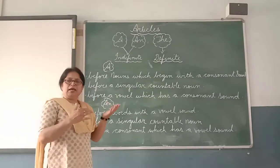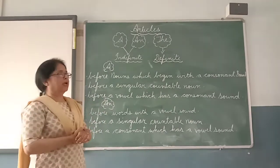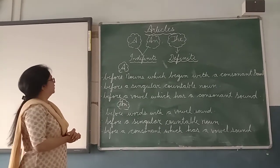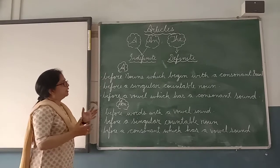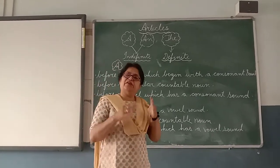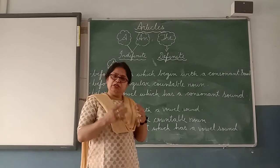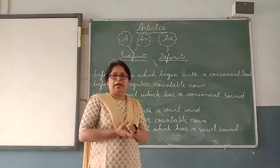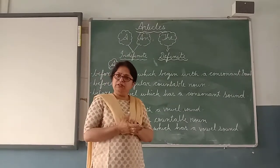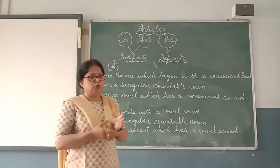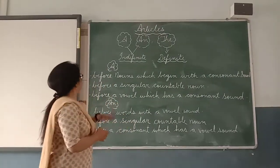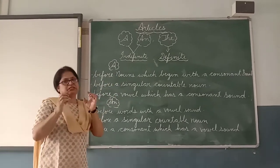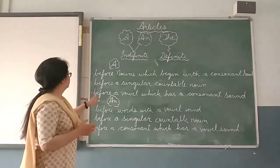How to use A and An, and where to use A and An. First, we learn the usage of the article A. It is used before nouns which begin with a consonant sound. You know that there are 26 letters in the English alphabet, 5 are vowels and 21 are consonants. The vowels are A, E, I, O, U. So the word should begin with a consonant sound and not a vowel sound.